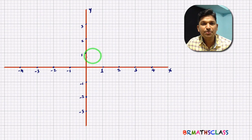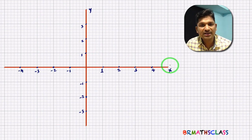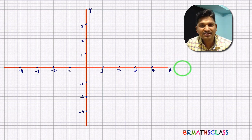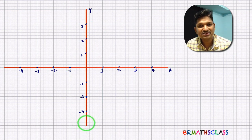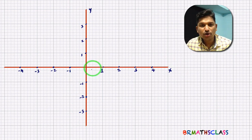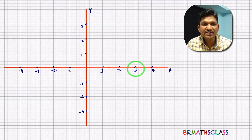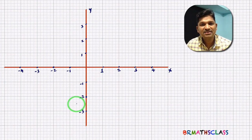Observe here — I consider two mutually perpendicular lines. The horizontal line is called the x-axis, and the vertical line is called the y-axis. The x-axis and y-axis divide the plane into four parts.